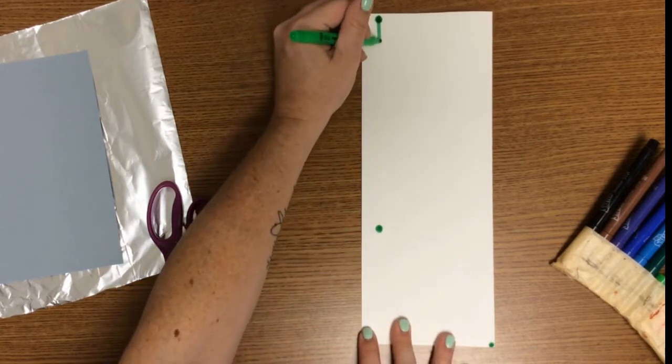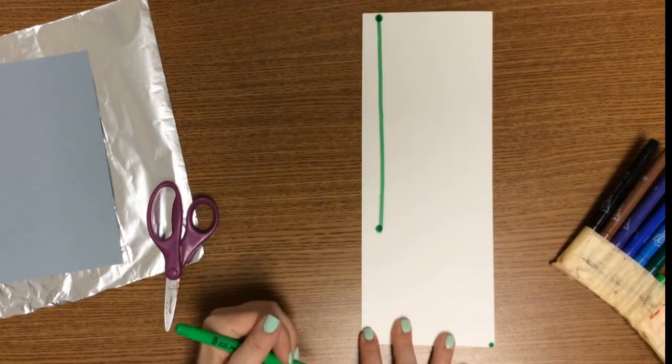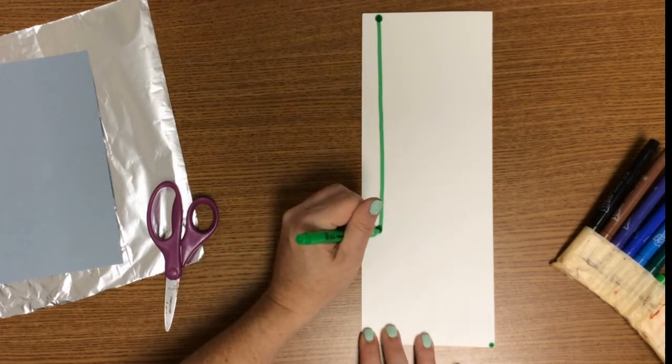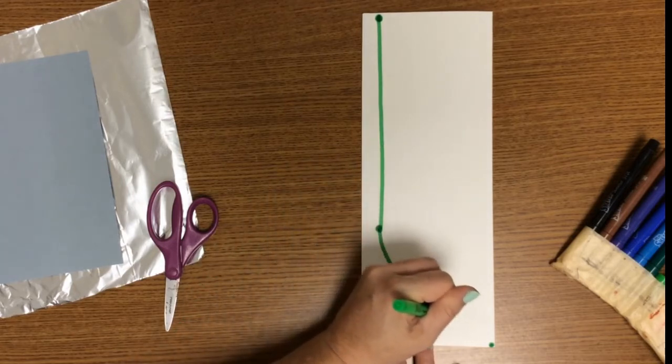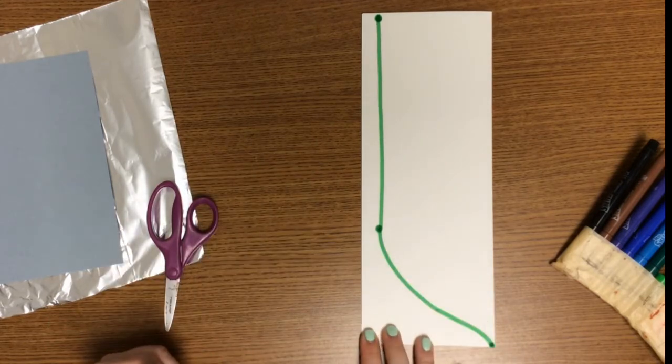What I want you to do is draw a straight line to this dot, and then you're going to curve to this dot. There we go.